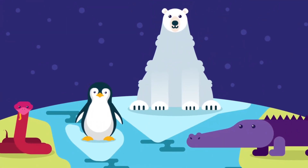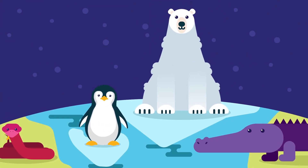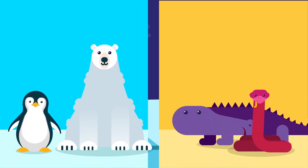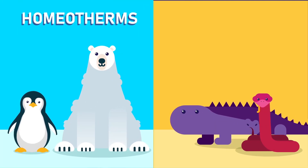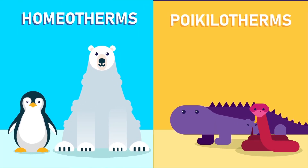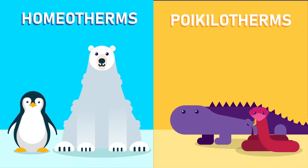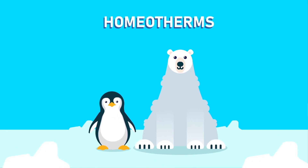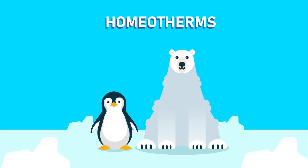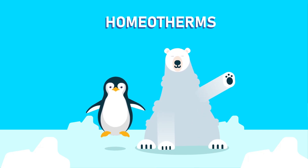There are different ways in which organisms maintain their body temperature. These organisms can be classified into homeotherms or endotherms and poikilotherms or ectotherms. Homeotherms or endotherms possess the ability to generate their own body heat. The only endothermic classes of organisms are mammals and aves.